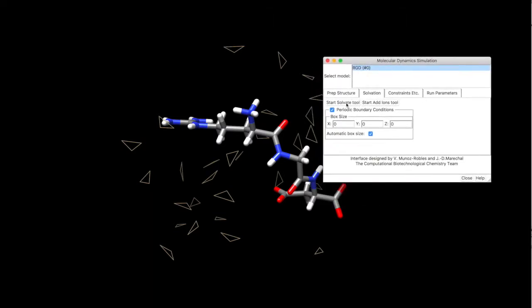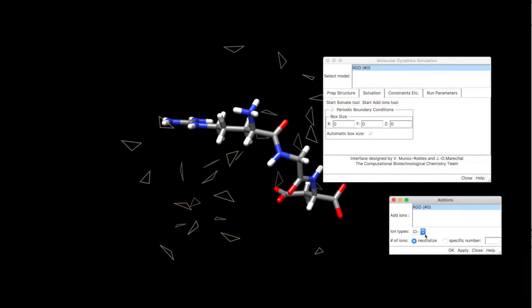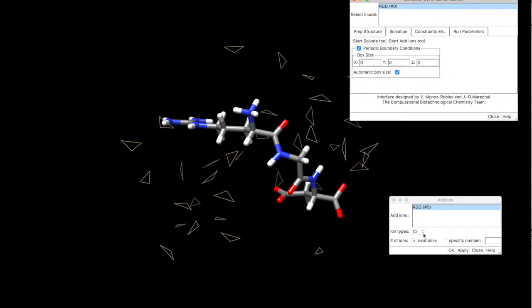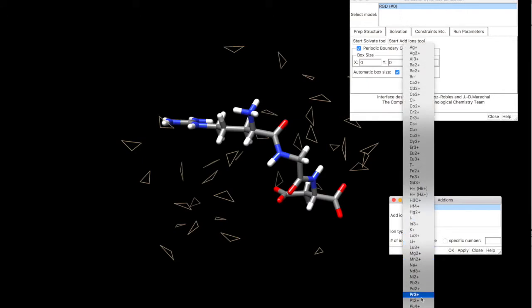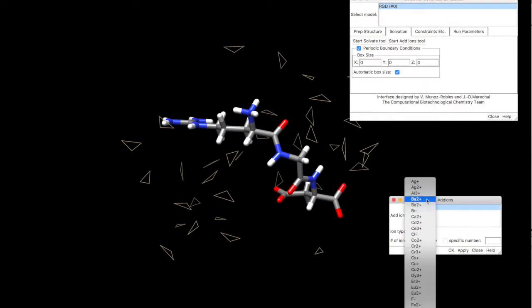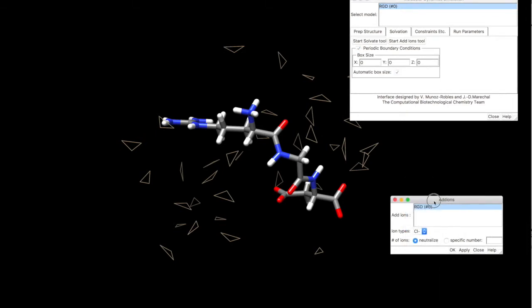Once we have that, we can add additional ions if needed. We can neutralize, or add specific atoms to the system. If you click ion types, chlorine, let's click apply, no chlorine is shown. Let's click for example, see the selection here, it's quite good. What else we have here, looks like our system is already neutralized, so we don't have to add anything. So click ok.